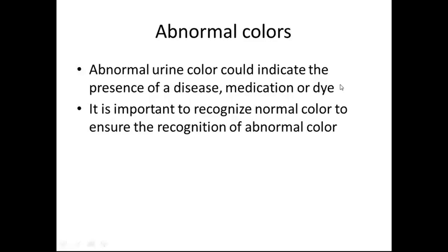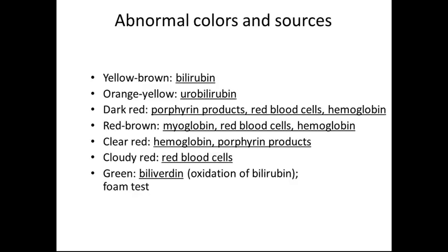It is important to recognize normal color to ensure recognition of abnormal color. A yellow-brown color may indicate an excessive amount of bilirubin in the urine. Orange-yellow could mean urobilinogen is present. Dark-red indicates porphyrin products, red blood cells, or hemoglobin. Porphyrin products are red blood cell byproducts, also called the heme molecule. Porphyrin is combined with iron to form the heme.